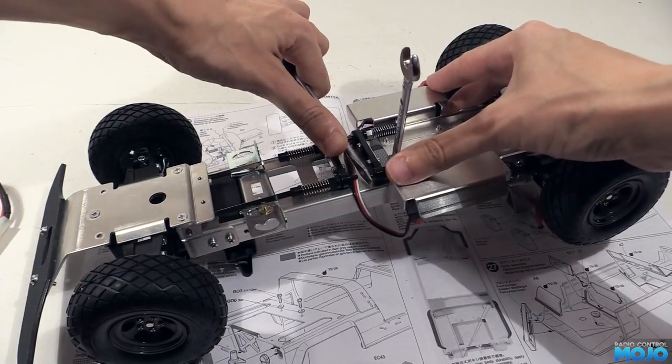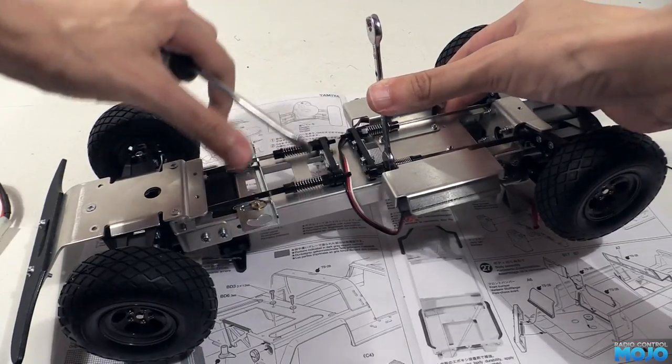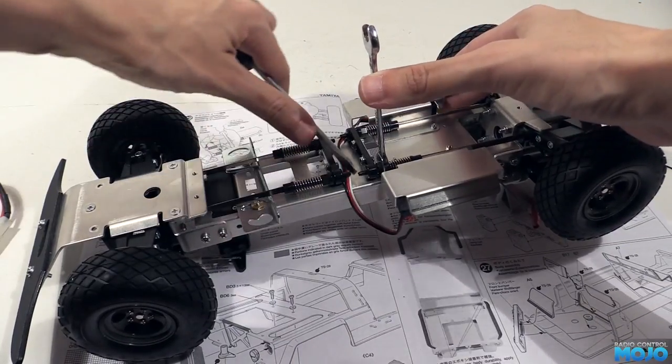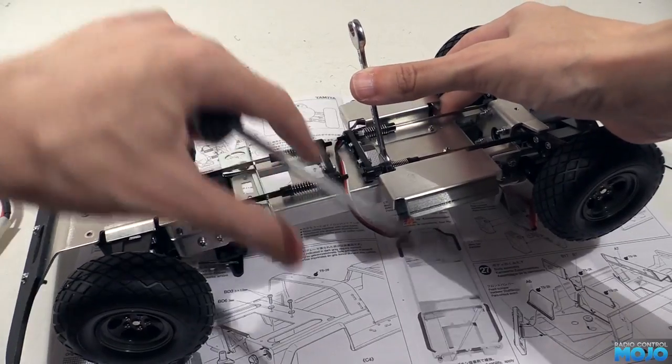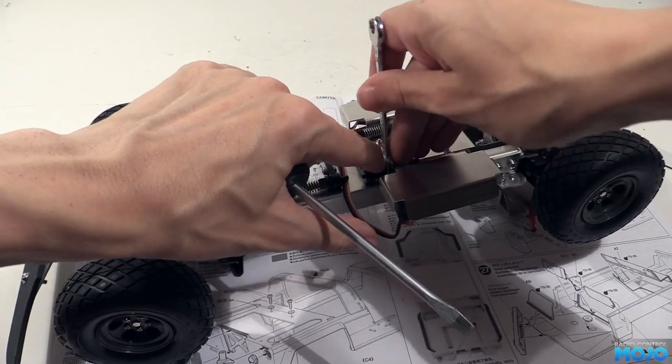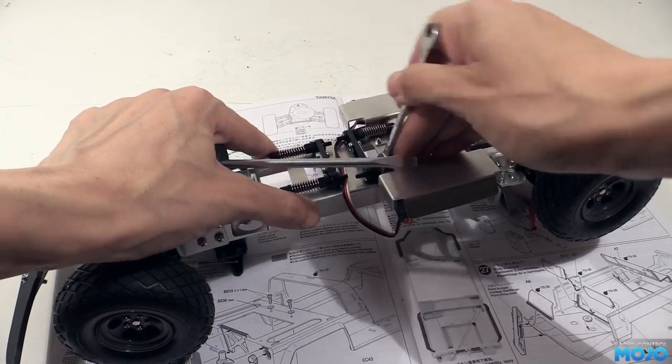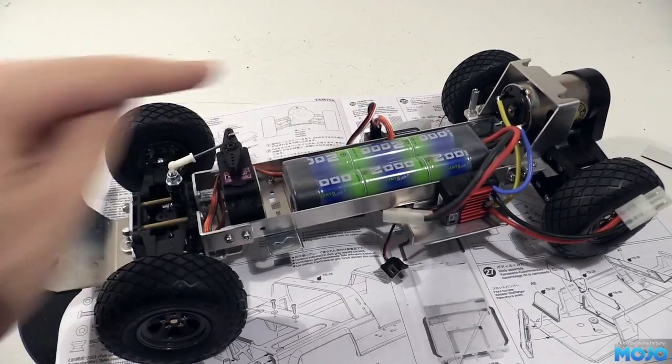You can just about get a spanner in, but you can't turn it very far, so maybe the pliers are a better bet. Either way, there we go, just a little bit of sag.